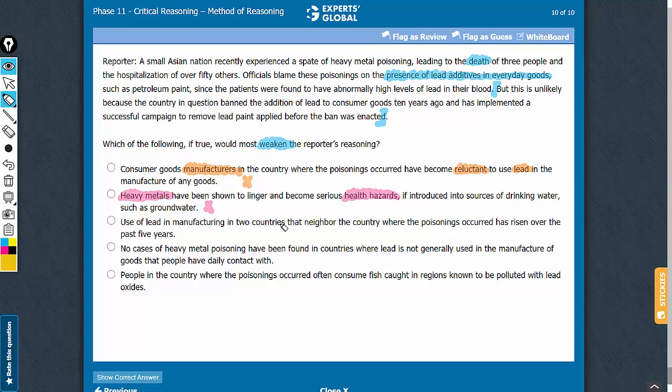Answer choice C is a trap. Some students will select this. Please be always aware when you see such answer choices. It's about neighboring countries and the use of lead in these neighboring countries. Such answer choices are rarely correct on the GMAT.